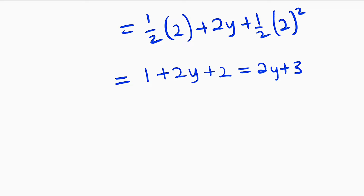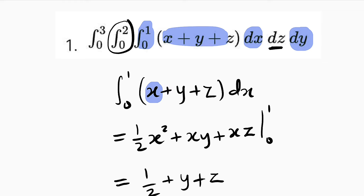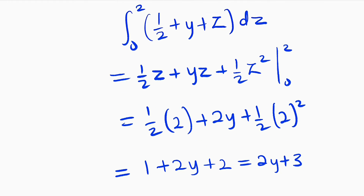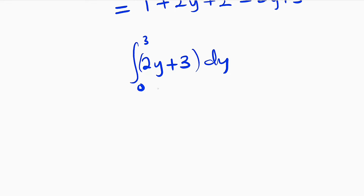So 2y plus 3 is going to be the last function we are going to integrate, with respect to y. We are going to integrate it using the first definite integral from 0 to 3. So lastly we have the integral of 2y plus 3 from 0 to 3 dy. If you integrate 2y you obtain 2y squared divided by 2, and 3 is constant so we multiply it by y. Our boundaries are from 0 to 3.